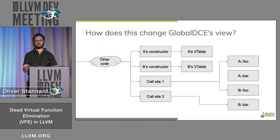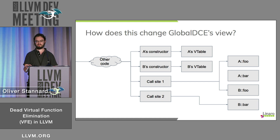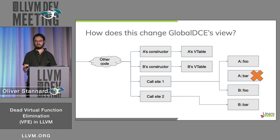We can use this information in global DCE to add links from the call sites to all of their possible targets. The first call site could go to either implementation of Foo; the second call site can only go to B's implementation of Bar. We know that A's Bar is now completely unreferenced, so we can delete it and replace its entry in the V-table with a null pointer.